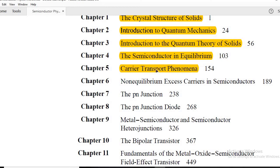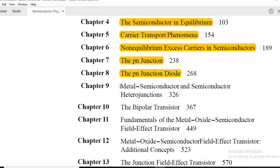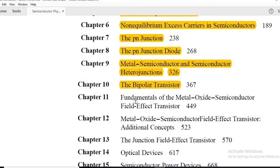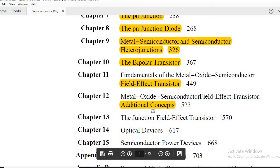And the fifth chapter, carrier transport phenomena and non-equilibrium excess carrier in semiconductor and PN junction, which is very important for GATE examination. PN junction diode, metal oxide semiconductor, heterojunctions, the bipolar junction transistor, fundamentals of metal oxide semiconductor field effect transistor. Few concepts are additionally added here in this chapter, so you can go through in brief and prepare a note.